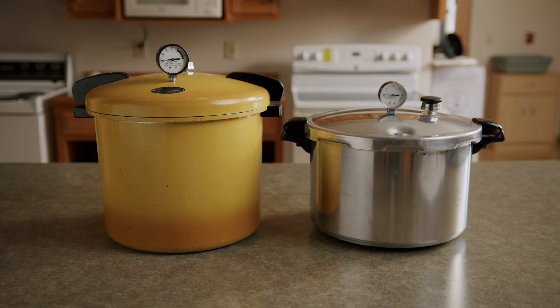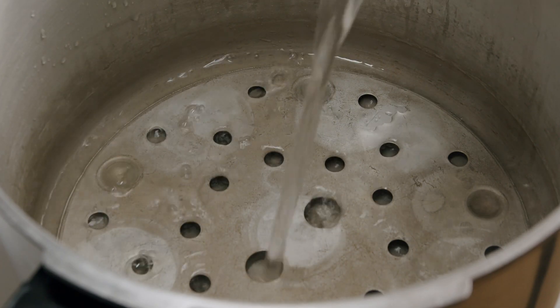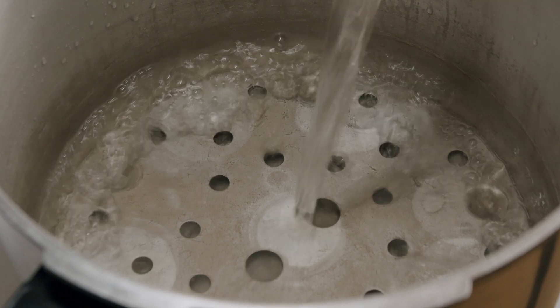To use your pressure canner, first read the manufacturer's directions, then add two to three inches or two quarts of hot water to the canner. Heat water to simmer.